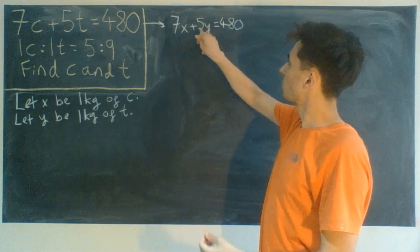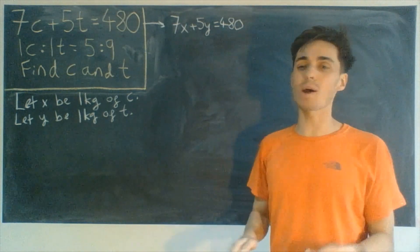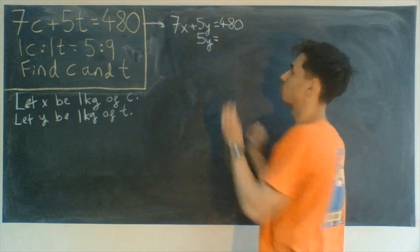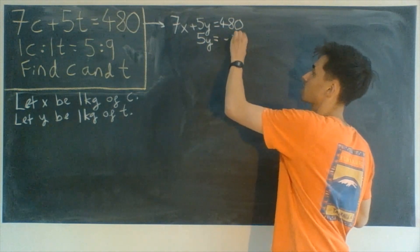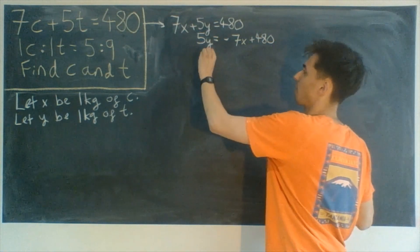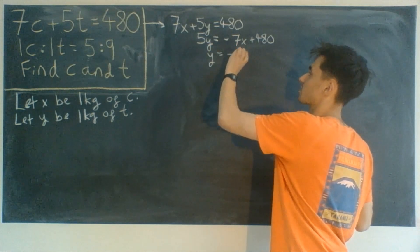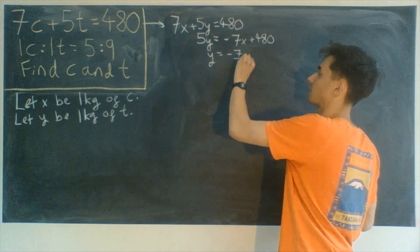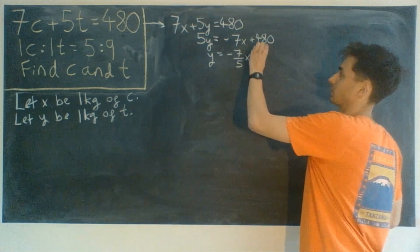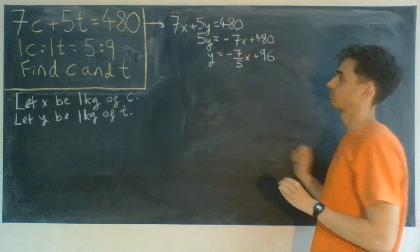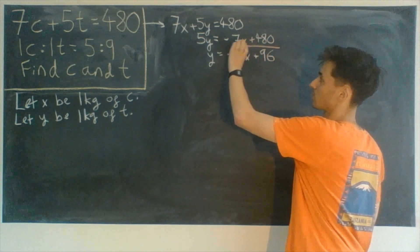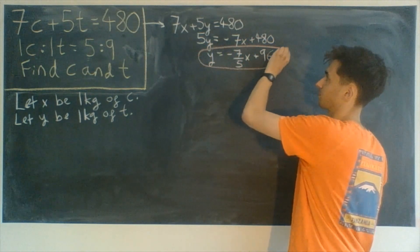We'd like to write this in the form Y = MX + C. So rearranging: 5Y = -7X + 480, and dividing through by 5 we get Y = -7/5 X + 96. This is super, super important — I'm going to put a ring around it so we remember it for later.